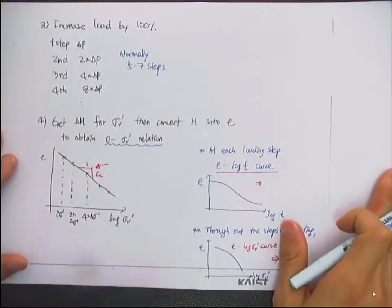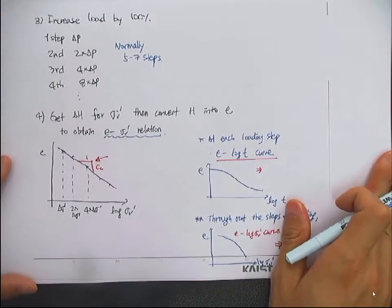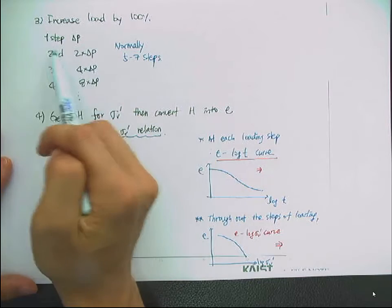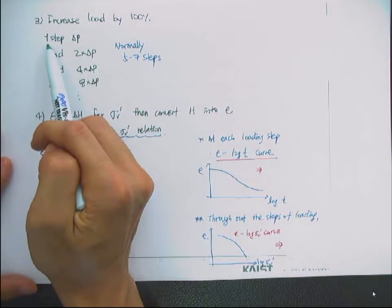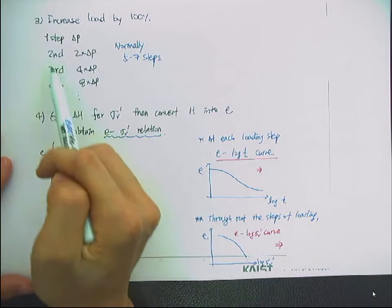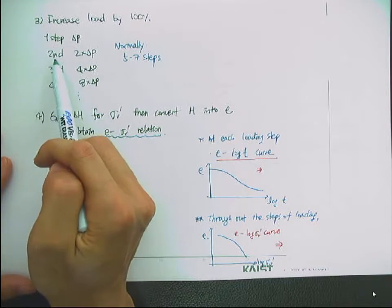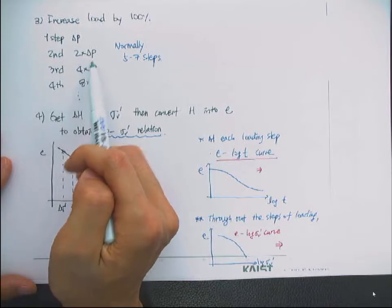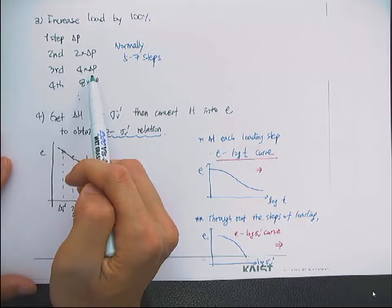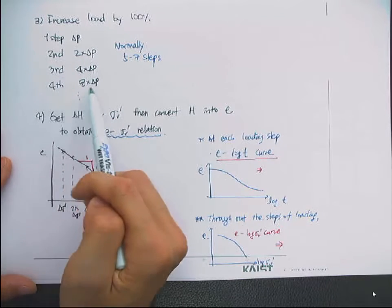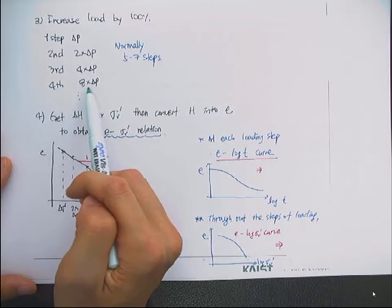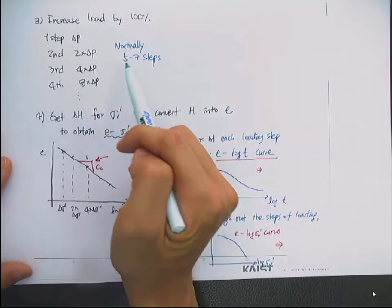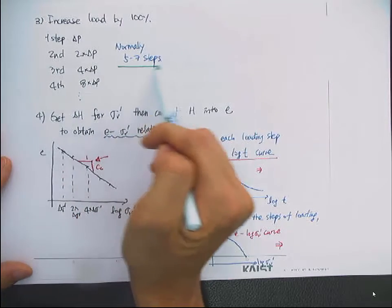You increase the load by 100%. So if the first step loading was delta P, then the second step is two times delta P, the third step is four times delta P, and the fourth step is eight times delta P. You repeat these loading steps — normally five to seven steps.